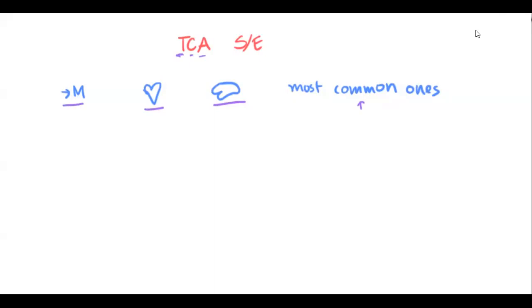Let's start with the anti-muscarinic effect. We can remember the anti-muscarinic effect with the following mnemonic: hot as a hair, dry as a bone, red as a beat, mad as a hatter, and full as a flask.